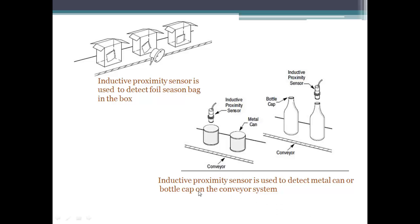Inductive proximity sensors are widely used in many technical systems. For example, they can be used to detect metal objects on conveyor systems like cans, bottle caps, and foil seasoning bags in food products.